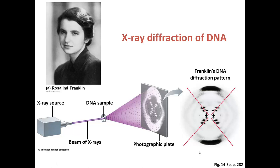She could discern several different things from this pattern. First, that x shape indicates that DNA is a helix. Second, she also knew that there had to be some kind of repeating patterns in the DNA, and specifically those repeating patterns had to involve measurements of 0.34 nanometers, 3.4 nanometers, and 2.0 nanometers. And finally, she could also discern that the bases were stacked like the rungs of a ladder.